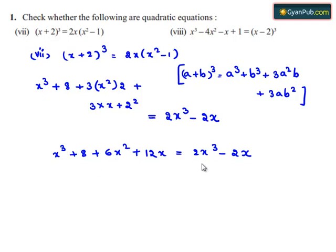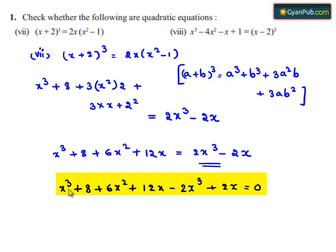On transposing the terms on the right hand side to the left hand side, we get x cube plus 8 plus 6x square plus 12x minus 2x cube plus 2x is equal to 0. So x cube and minus 2x cube becomes minus x cube, and 6x square plus 12x plus 2x becomes plus 14x, and plus 8 is equal to 0.